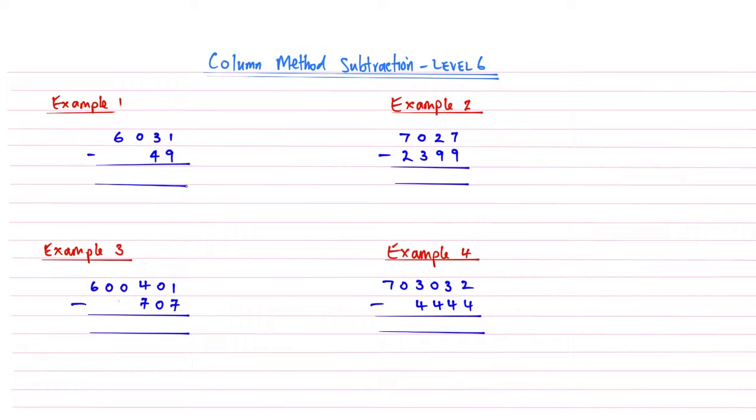Hi, this is Maths from Scratch and this is column method subtraction level 6. My name is Richard and in this lesson we're going to look at how we combine the idea of double compensating, which we saw in level 4, and the chain of borrowing, which we saw in level 5. Now if you're new to column method subtraction, you might want to start at level 1 and work up to this, otherwise this lesson won't make much sense.